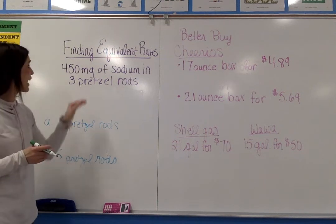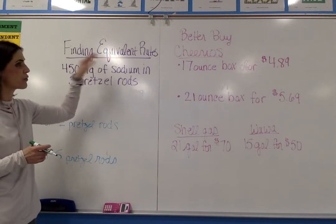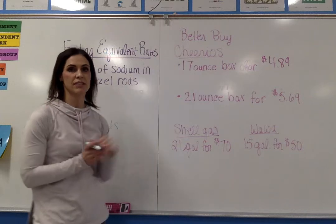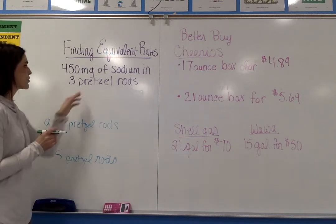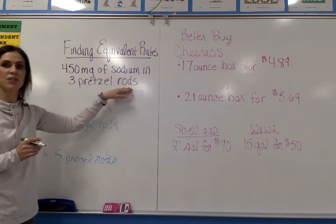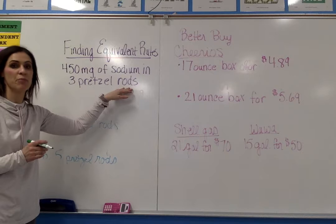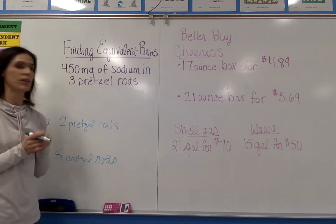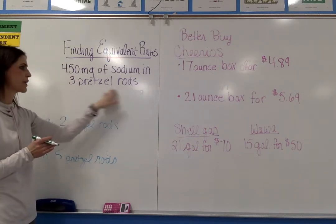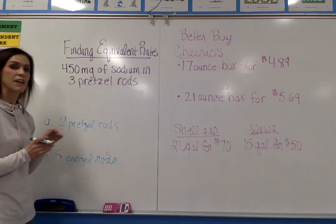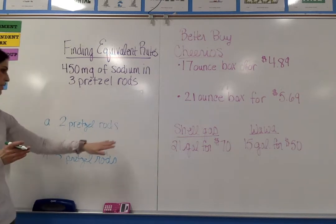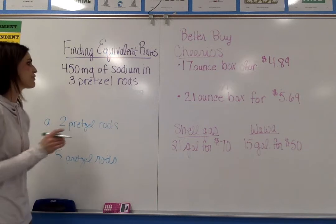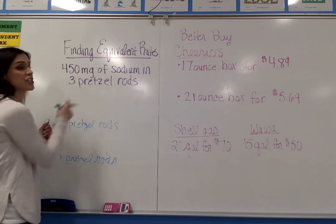Today we're going to look at finding equivalent rates and how we can use rates to find a better buy. We're given information about sodium in pretzel rods — specifically, 450 milligrams of sodium in three pretzel rods. To find the amount of milligrams of sodium in two and five pretzel rods, we first need to find the unit rate.